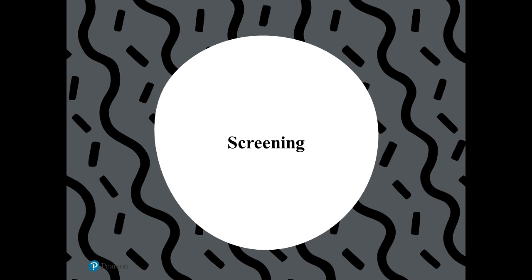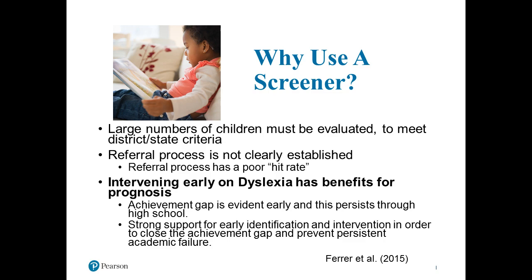Let's start with screening. The two primary reasons we use a screening are: first, large numbers of kids need to be evaluated and we need to meet district or state criteria — screeners allow us to assess at a larger, more comprehensive level. Second, thinking about how well our referral process functions — referral processes often show very poor hit rate, so whatever our referral process is may not lead to a lot of special education classifications, indicating a poorly established referral process.